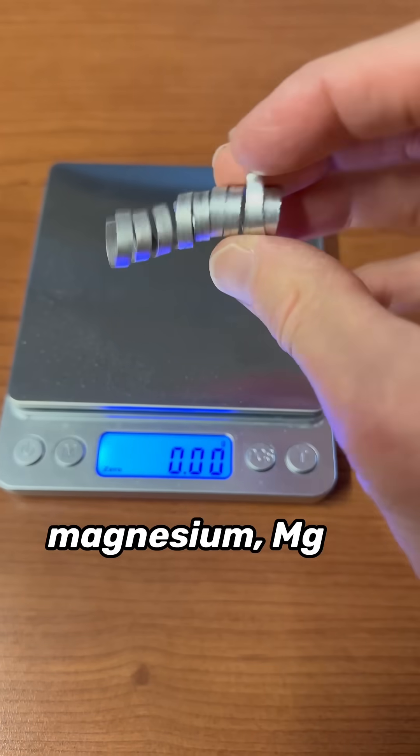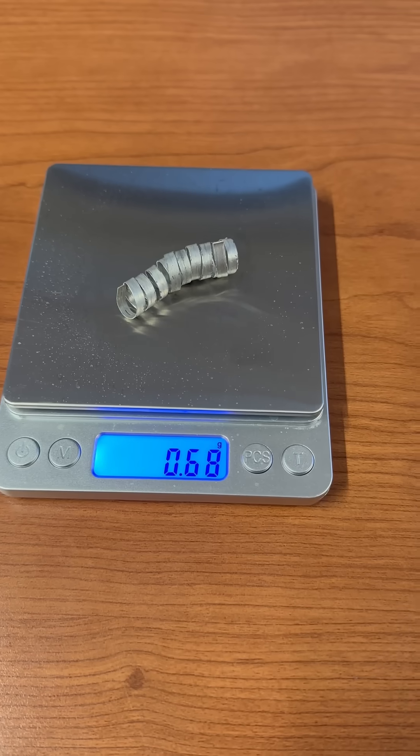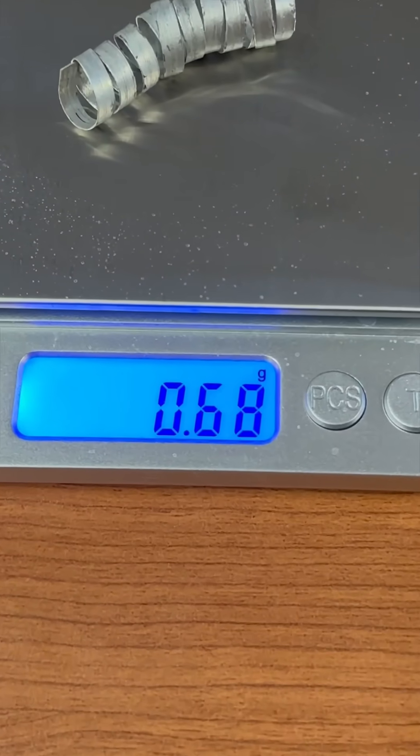First, let's find the mass of the strip of magnesium we're going to use. We can see that it has a mass of 0.68 grams.